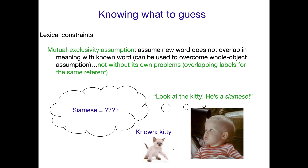Mutual exclusivity can cause these problems when we have overlapping labels for the same referent. That's just a tricky thing about the way word meanings connect to referents in the world.